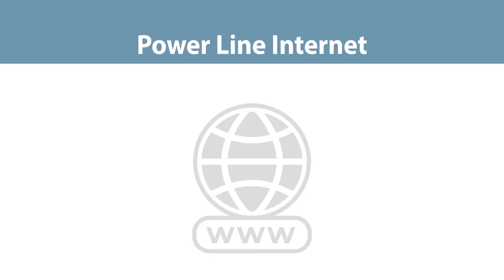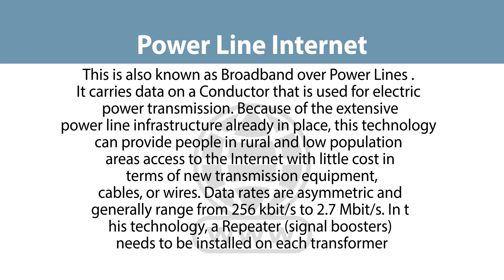There is also something called power line internet. Initially we used telephone lines with a modem to access the internet, then cable networks. Now we can also use power lines. The wires supplying power to your home can also be used to access the internet — this is called power line internet, also known as Broadband over Power Lines (BPL). It carries data on a conductor used for electric power transmission.